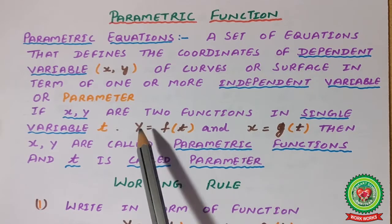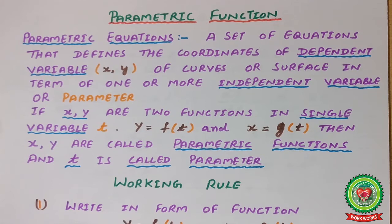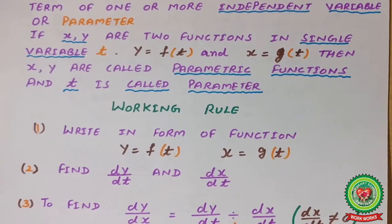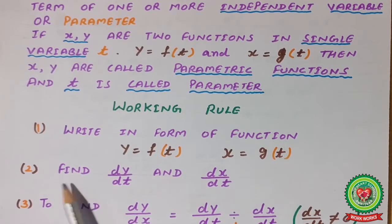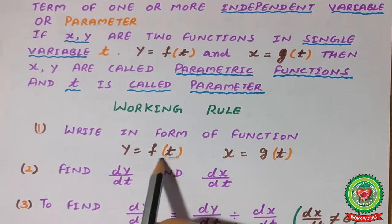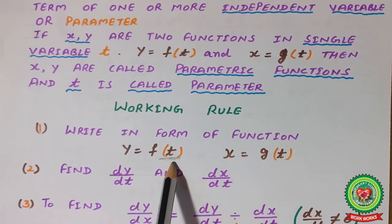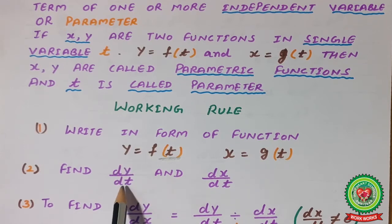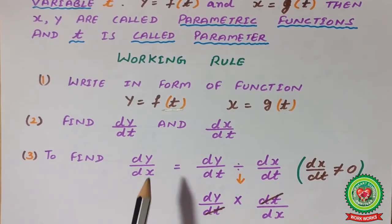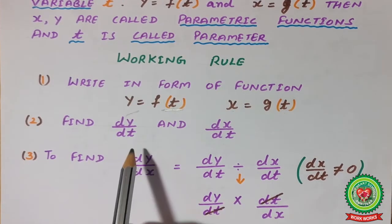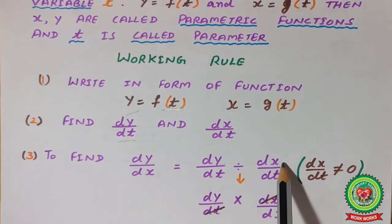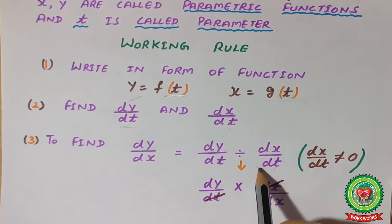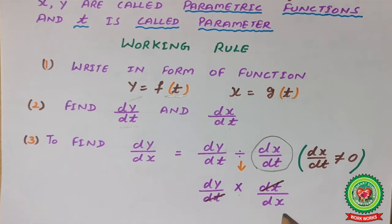Through the parameter we find the change in the two functions. The working rule is simple. We write the functions as y = f(t) and x = g(t), then differentiate both with respect to the common variable t to get dy/dt and dx/dt. To find dy/dx, we divide dy/dt by dx/dt — that is, dy/dt multiplied by the reciprocal dt/dx — to get the value of dy/dx.